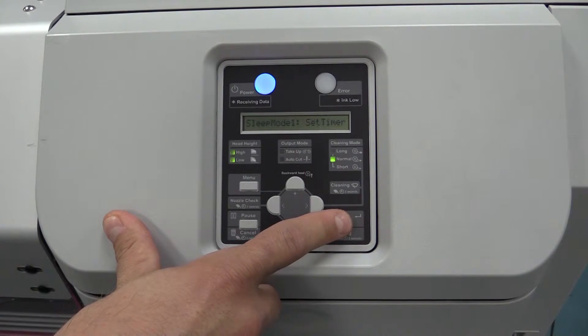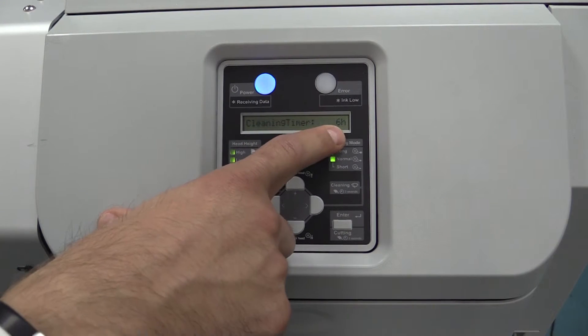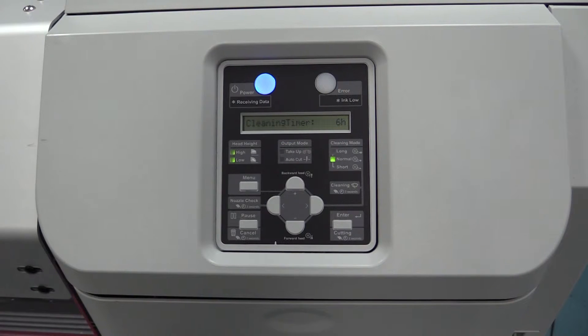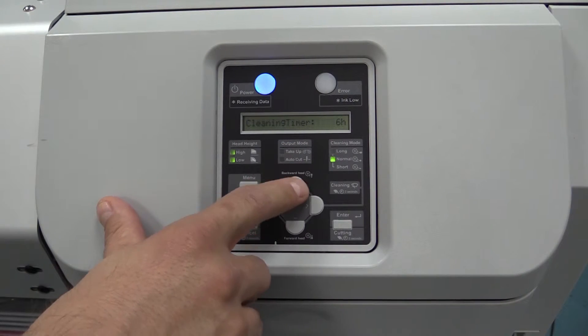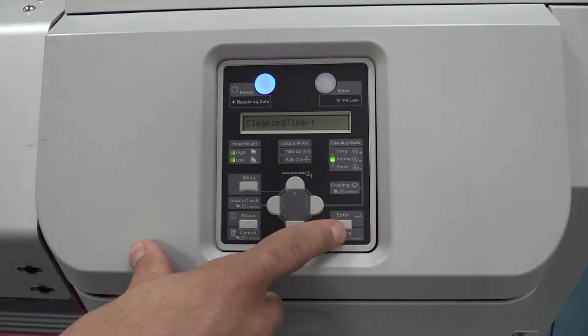First we want to go through and set the timer. This is going to set your duration between cleans. If you remember from our previous video, we talked about the daily auto clean being set to every 24 hours. You can see right now this is set to 6 hours, which is the default for the cleaning from MUTO. I would recommend turning that up to 24 hours so that it's going to do its standard daily clean.